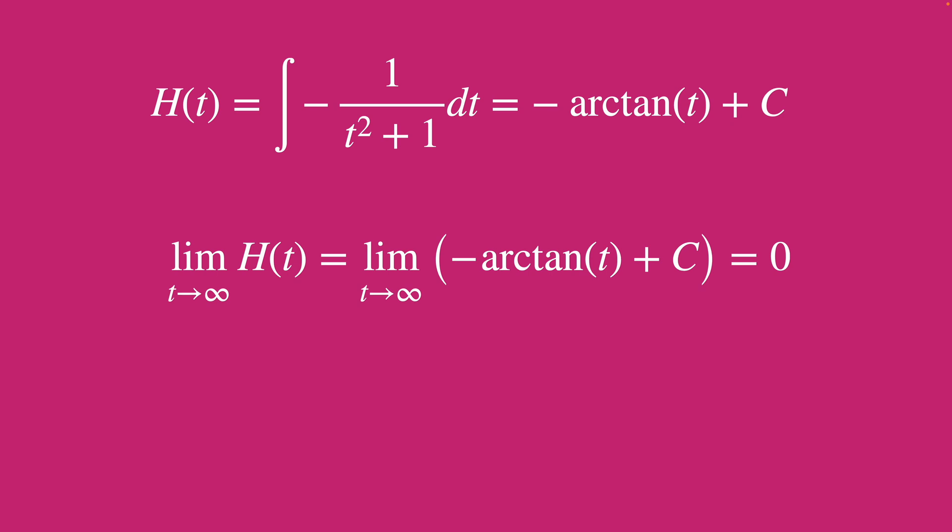So now to get our original integral back, all we can do is just find 2 times h of 0, since at 0, our additional exponential term cancels out. And yeah, we're done.